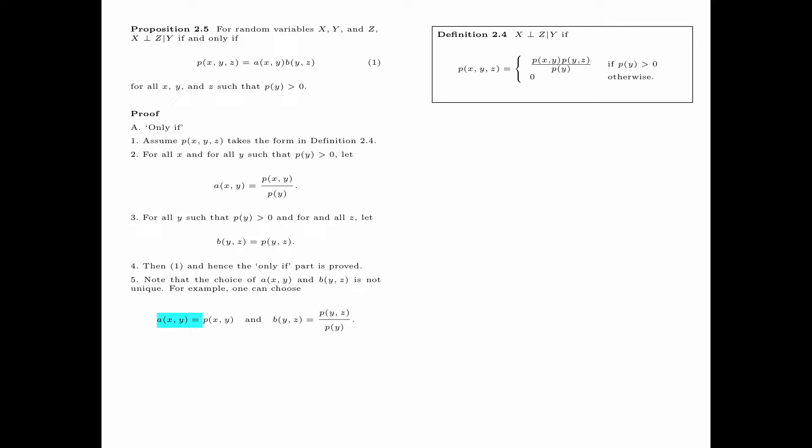We note, however, that the choice of a(x,y) and b(y,z) is not unique. For example, one can also choose a(x,y) equal to p(x,y), and b(y,z) equal to p(y,z) divided by p(y).